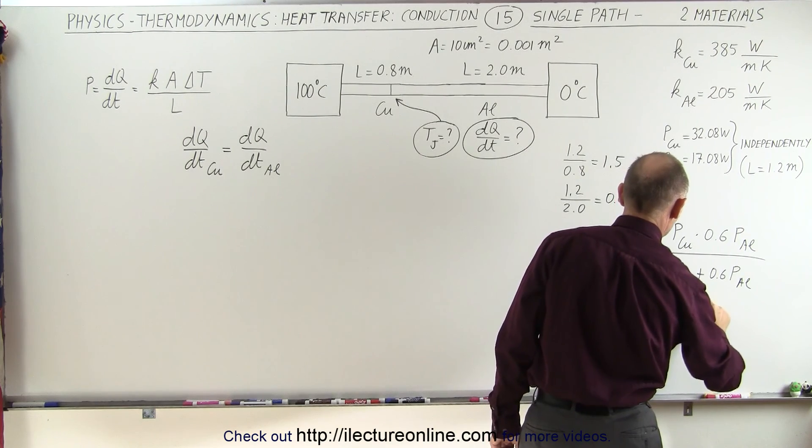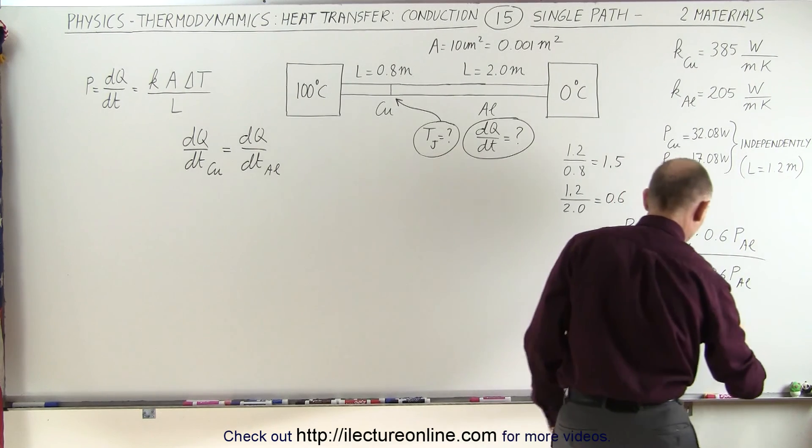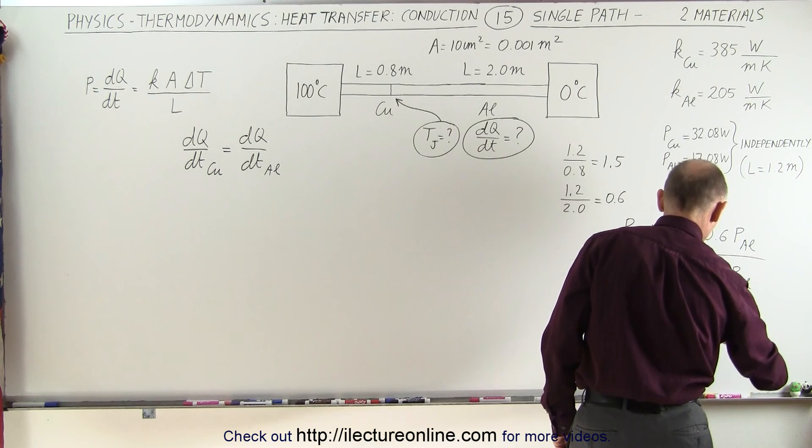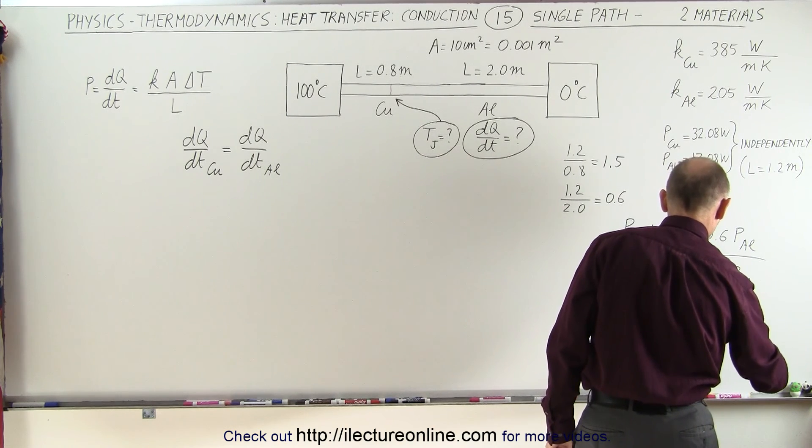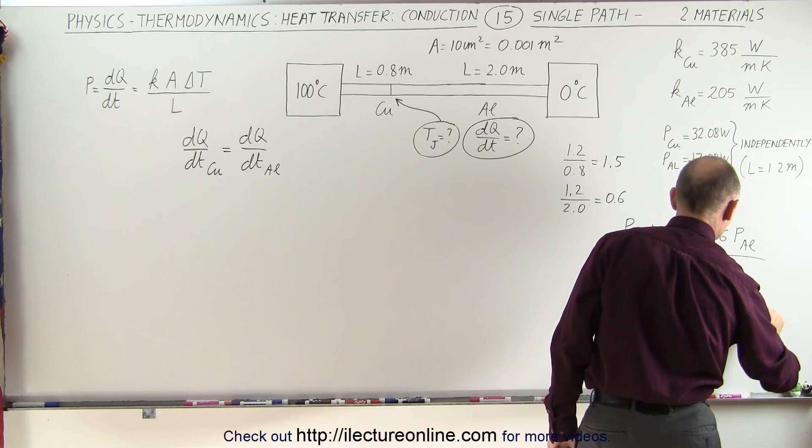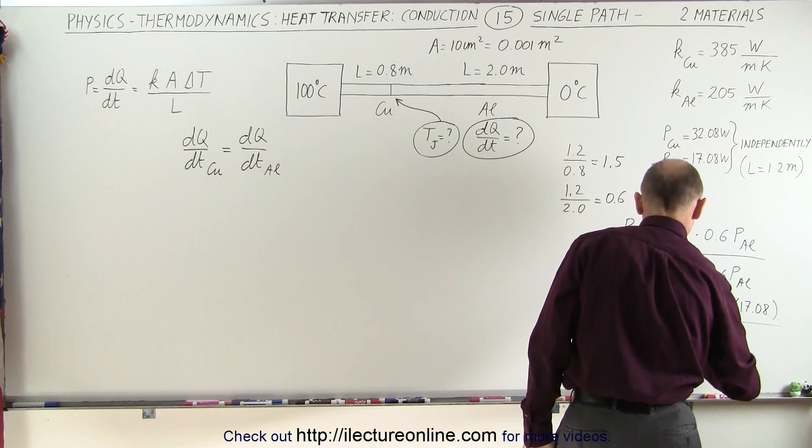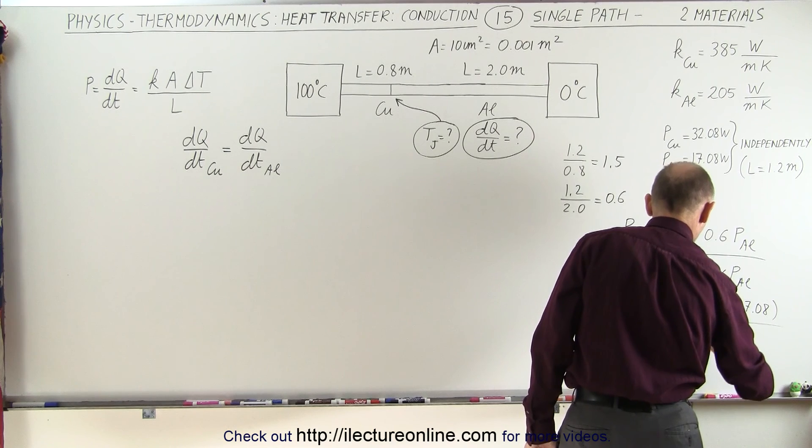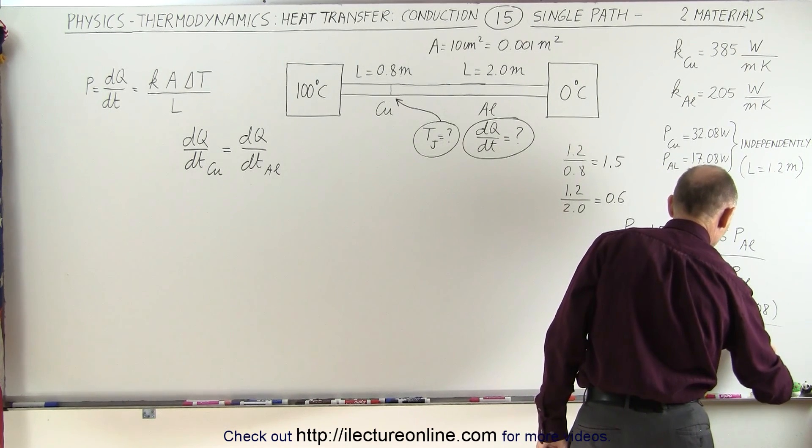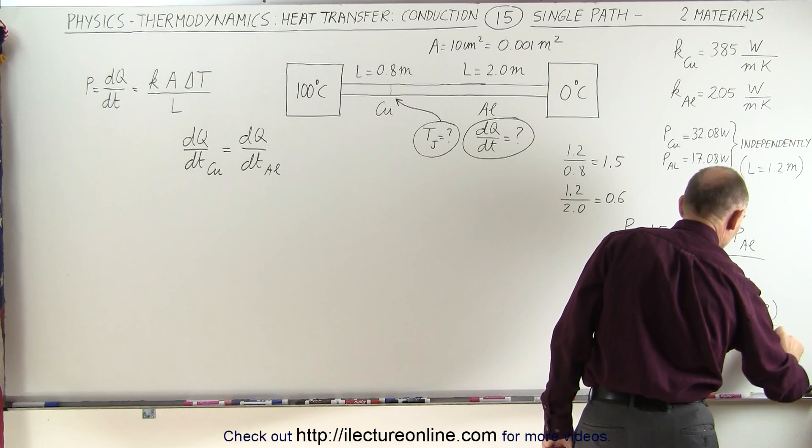So this is equal to 1.5 times 32.08, oh not plus, this is multiplied, multiplied times 0.6 times 17.08 all divided by 1.5 times 32.08. And this is plus 0.6 times 17.08.